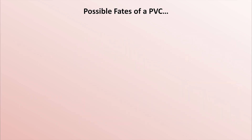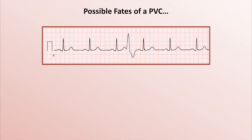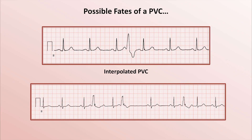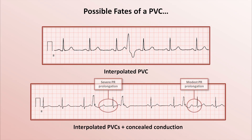There are a few other potential fates of a PVC. Sometimes after the PVC, there is enough time for the conduction system to fully recover before the next sinus impulse reaches the AV node and the His-Purkinje system, resulting in no pause in the underlying rhythm. It looks like someone just randomly stuck a PVC between two completely normal and normally timed QRS complexes. This is called an interpolated PVC. Occasionally, interpolated PVCs can partially depolarize the AV node such that the subsequent sinus impulse finds it relatively refractory — this is an example of concealed conduction, which manifests as a transiently prolonged PR interval following the first P-wave after an interpolated PVC.